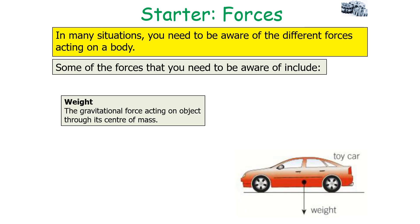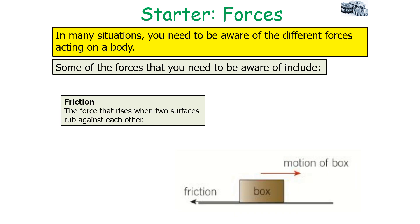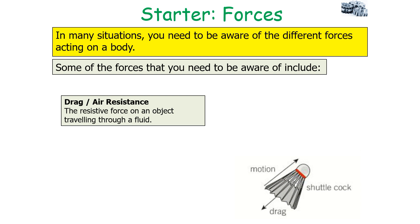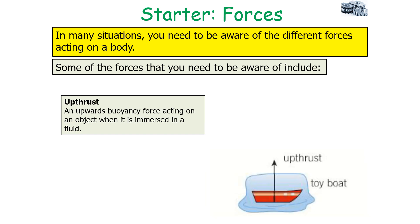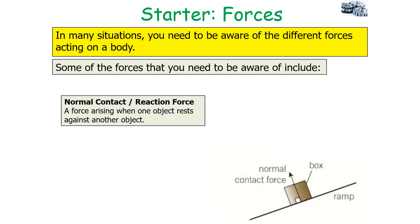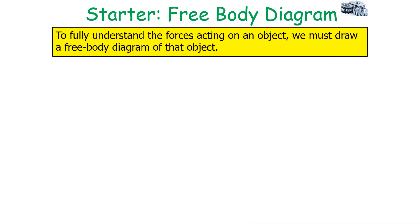In many situations you need to be aware of the different forces acting on a body. These include: weight, the gravitational force acting through an object's centre of mass; friction, the force that arises when two surfaces rub against each other; drag or air resistance, the resistive force on an object travelling through a fluid; tension, the force within a stretched cable or rope; upthrust, the upward buoyancy force on an object immersed in a fluid; and the normal contact force, which arises when one object rests against another.